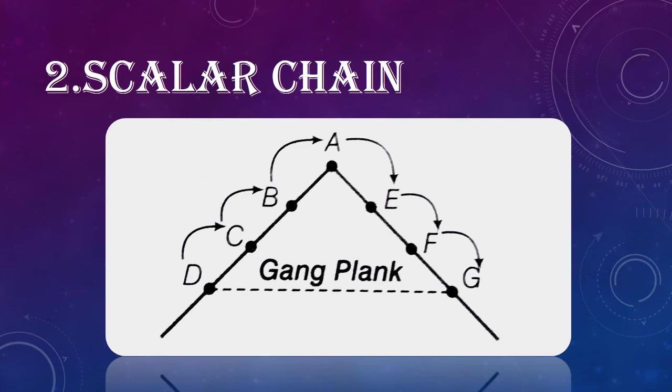Otherwise, if D has to get information to G, and there are two scalar chains - production department and finance department - D would have to go through C, B, A, then A, E, F, and finally G. This is a very long route. In an emergency situation, Fayol suggested we may follow the shorter route which is known as Gang Plank.